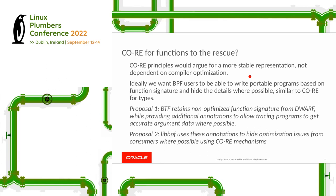Ideally we want to insulate users from that kind of pain if we're taking the CO-RE philosophy. One suggestion: we retain the non-optimized function signature from DWARF — which closely matches what the code says — while providing additional annotations that might allow a tracing program to get accurate argument data where possible. As a follow-on, libbpf might be able to use these annotations to insulate users from these optimizations, while probably not hiding it completely, since in some cases users might want to know these optimizations are in place.